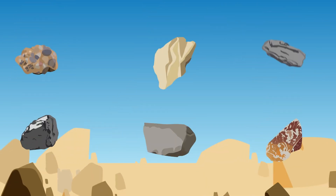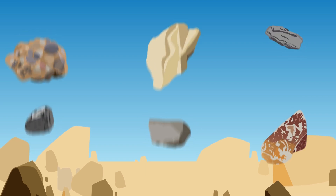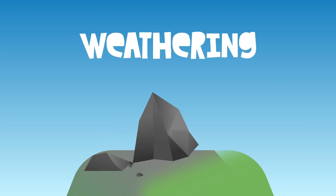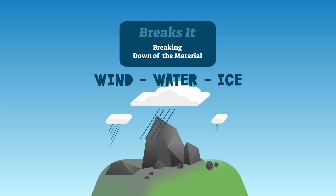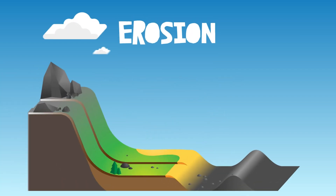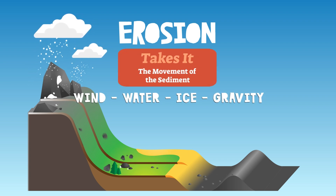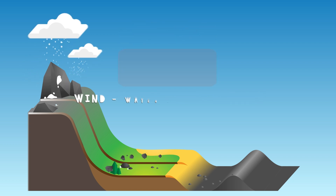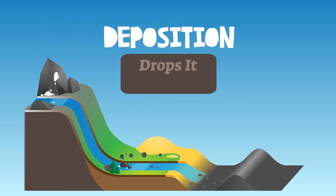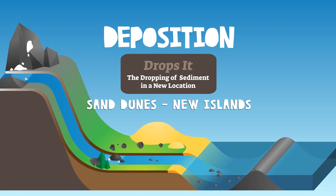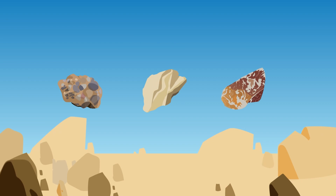Weathering is when rocks are broken down into smaller particles through wind, water, and temperature. Erosion is the transportation of weathered particles by wind, water, ice, and gravity. Deposition is when the sediment is deposited and accumulates in layers over time — in riverbeds, oceans, deserts, and lakes.